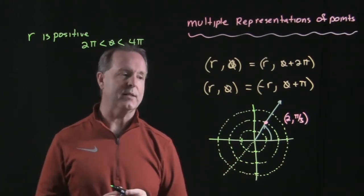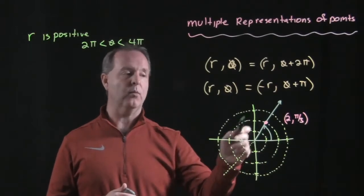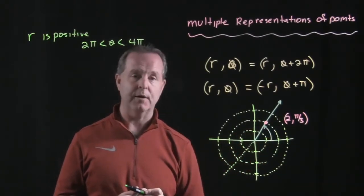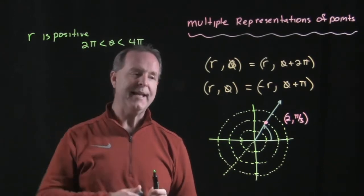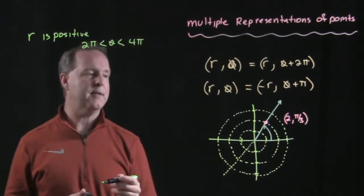So there are multiple ways we can represent our polar coordinates. Let's look at another way we can represent (2, π/3), where r is positive, but θ is between 2π and 4π. How would we represent that?